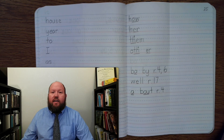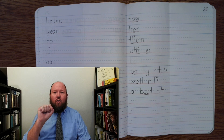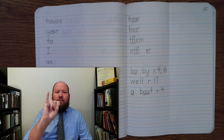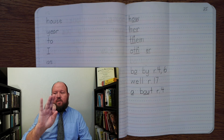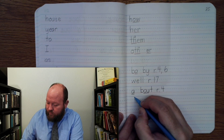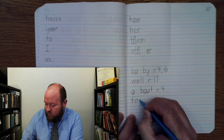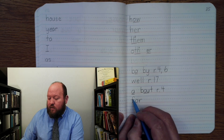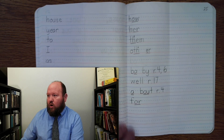The next word is for — like, what is that for? For. Base word: for. F-or. For. Write for. F-or. Markings: F-or, once. For.